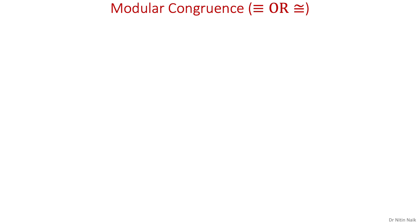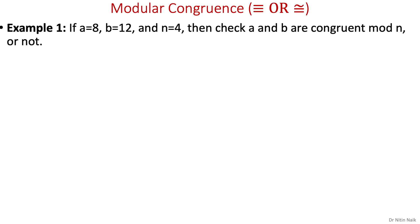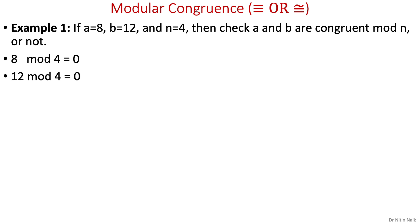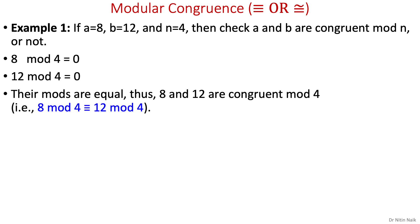Let's look at two examples, one is congruent and the other is not. In the first example, if a equals 8, b equals 12, and n equals 4, then we need to check whether a and b are congruent mod n or not. So 8 mod 4 is 0 and 12 mod 4 is 0. Since the mods are equal, therefore 8 and 12 are congruent mod 4, and we write this relation as 8 mod 4 is congruent to 12 mod 4.